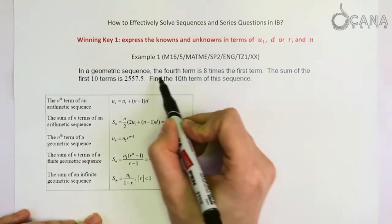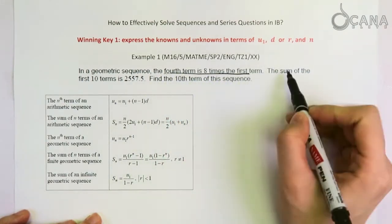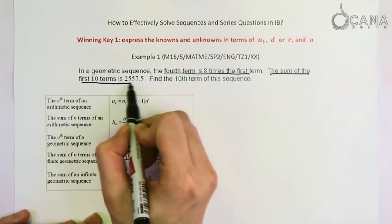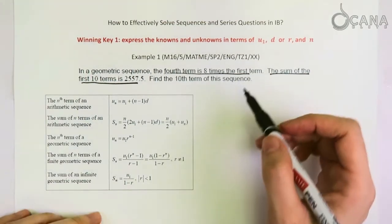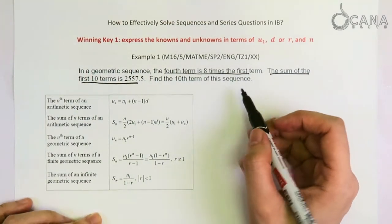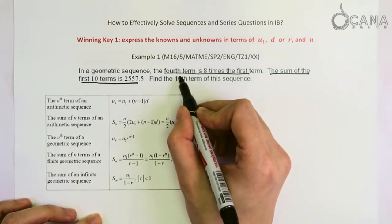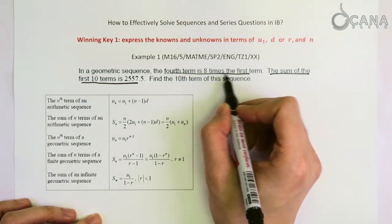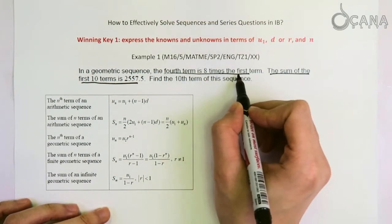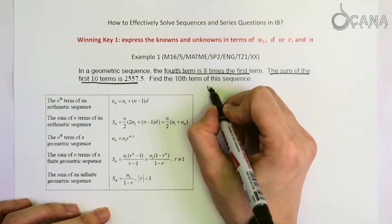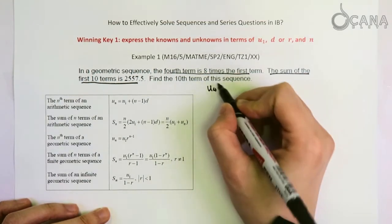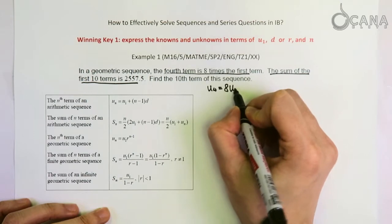First of all, there are two pieces of information given. They're all given in words, so let's try to represent them using symbols first. For the first piece of information, the fourth term is eight times the first term. That means U4, that represents the fourth term, is eight times the first term.